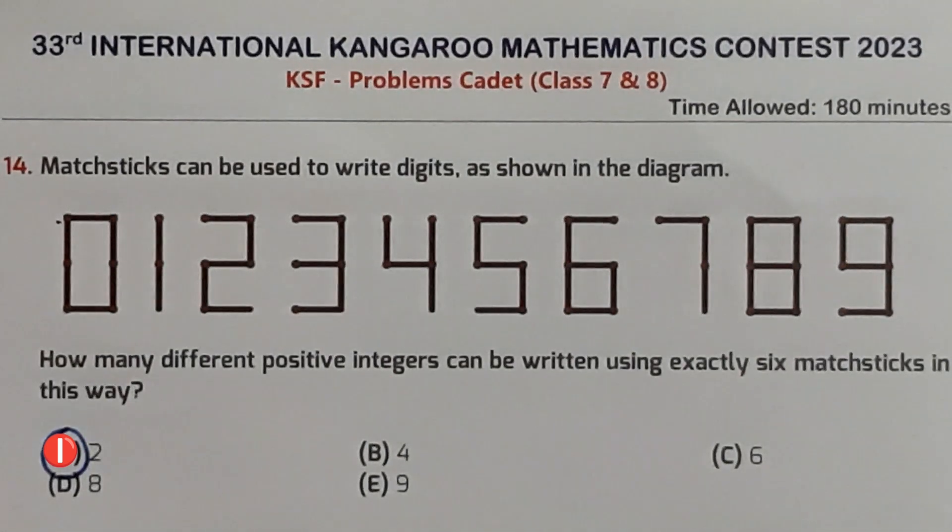The problem is: matchsticks can be used to write digits as shown in the diagram. How many different positive integers can be written using exactly six matchsticks in this way? The question shows that matchsticks are used to write digits from 0 to 9, as you can see here.